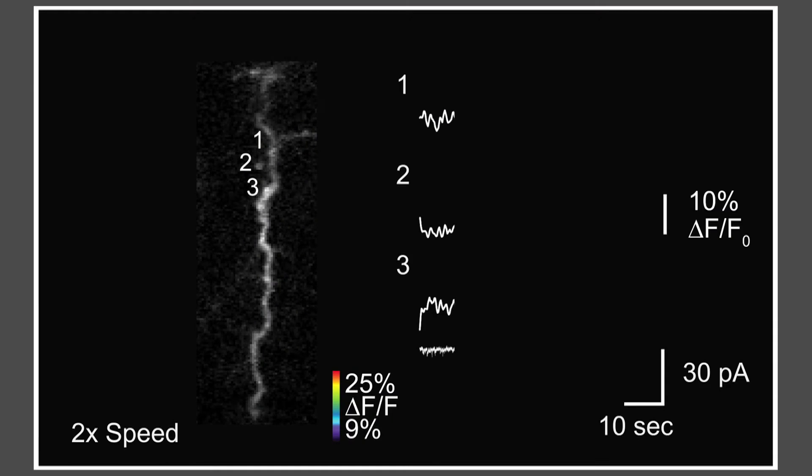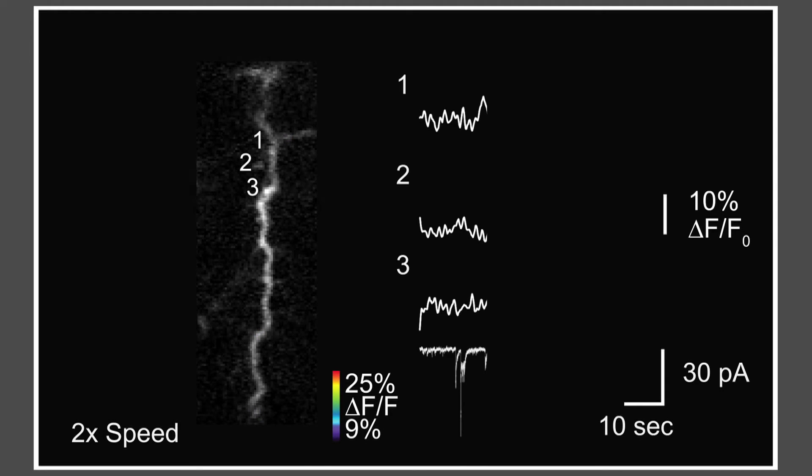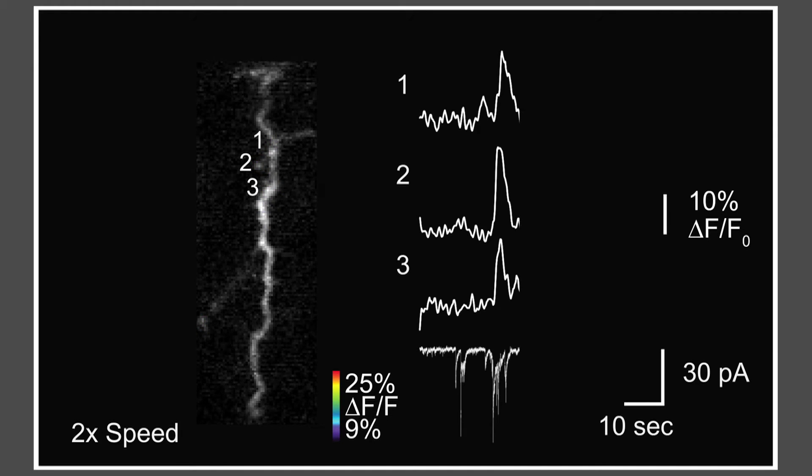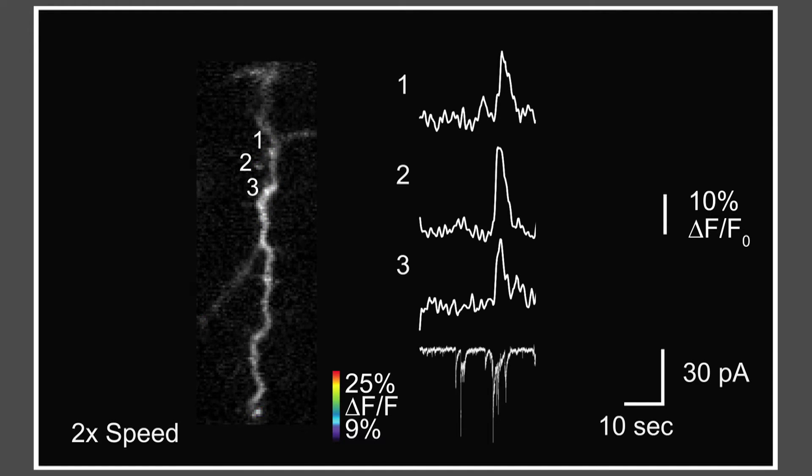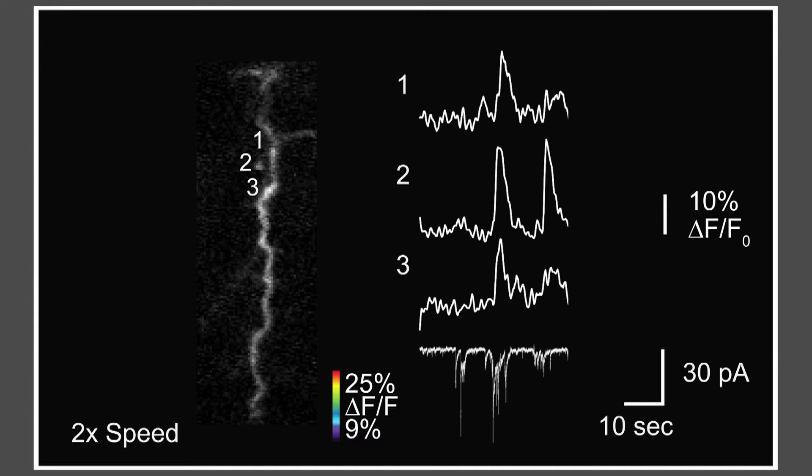Here is an example recording where you can see synaptic calcium signals superimposed on the dendrite in pseudocolor. Traces of the three sites and the voltage clamp recording are shown on the right. During the middle burst, the three marked sites are active at the same time.